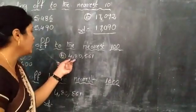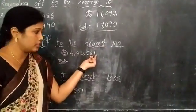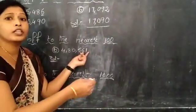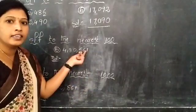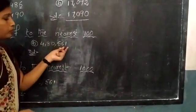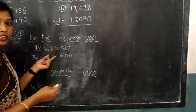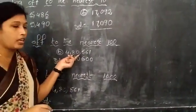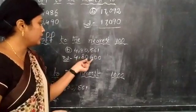Here also we are rounding to the nearest 100. We need to observe the 10's place and 1's place. The number in the 10's and 1's place is 61, which is more than 50. So we add 1 to the 100's value, and the 10's and 1's places are replaced with 0. Other digits are written as they are. So the rounded number of 4,80,561 is 4,80,600.